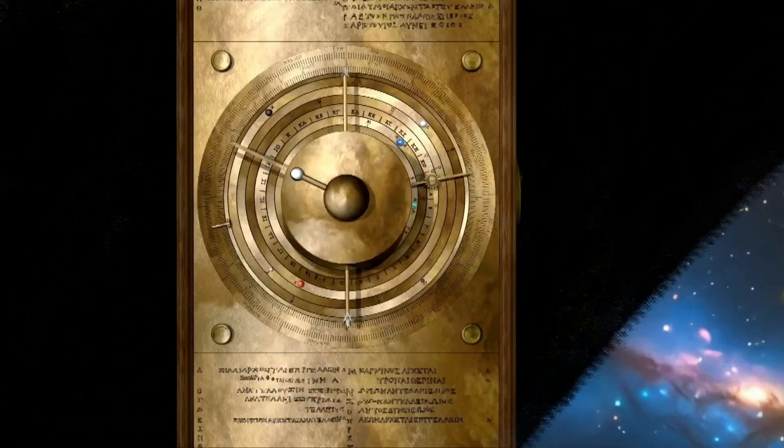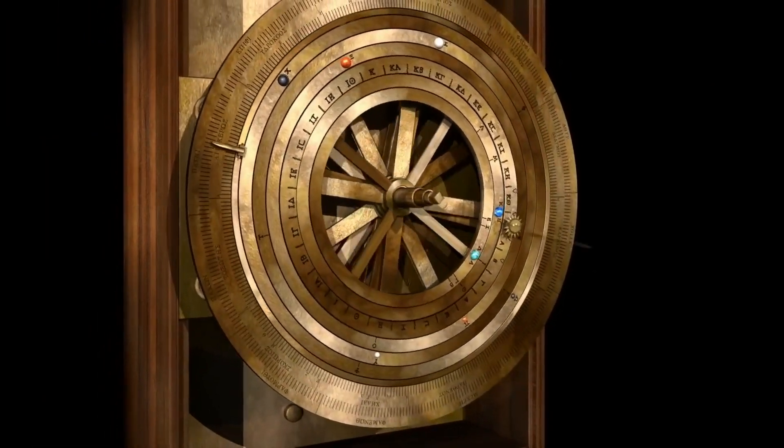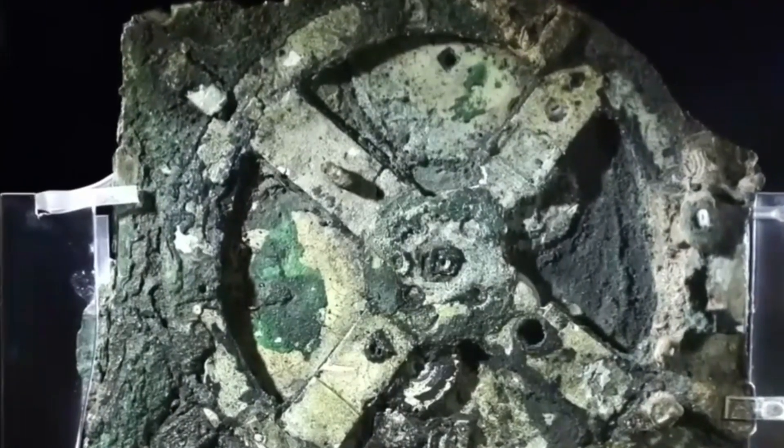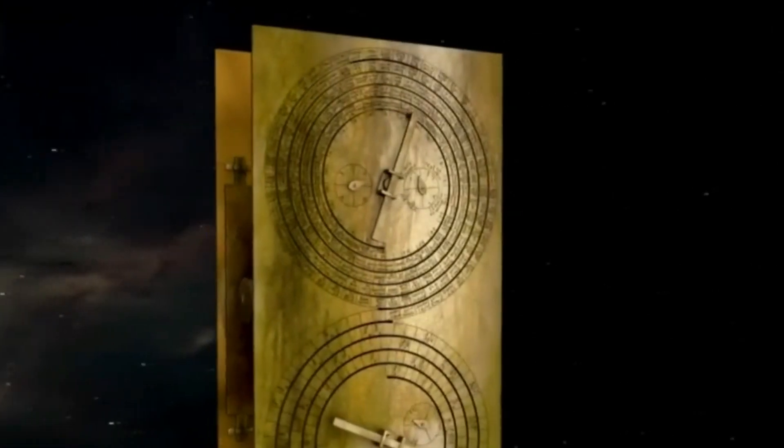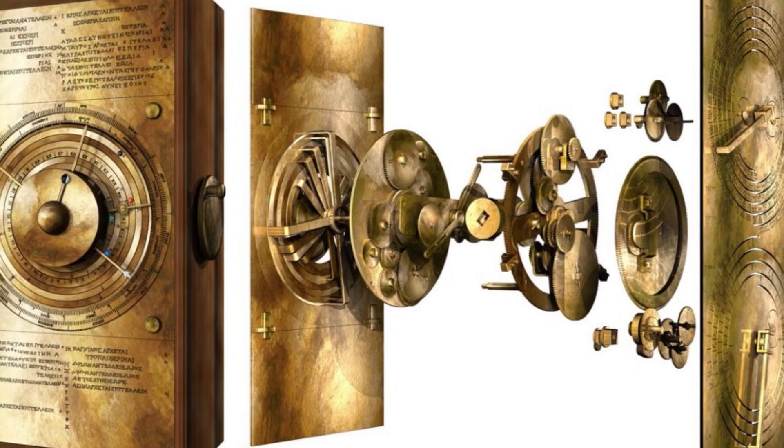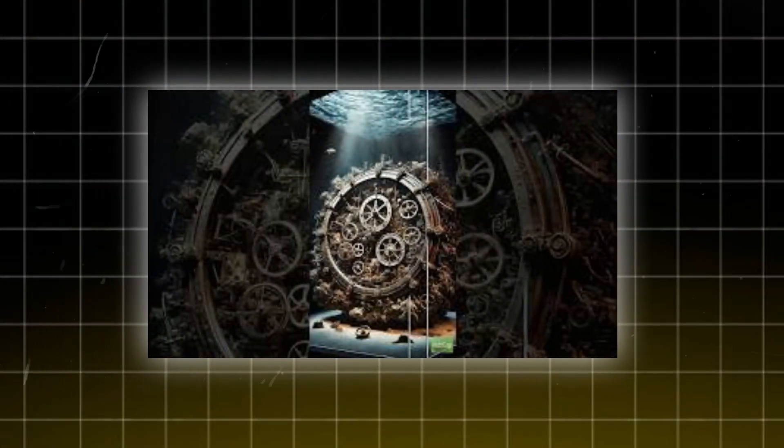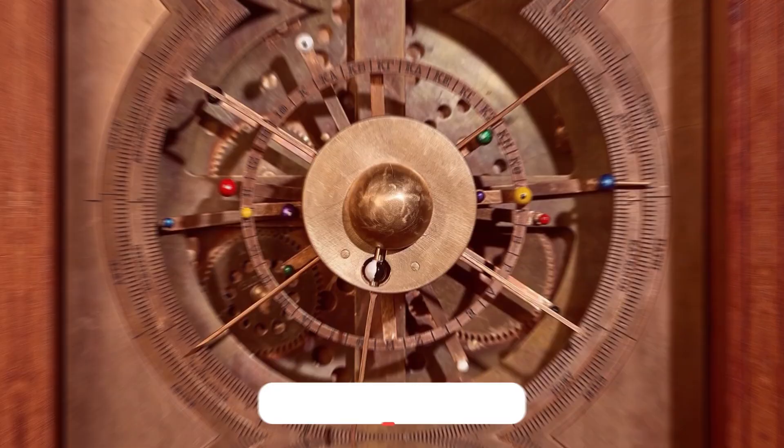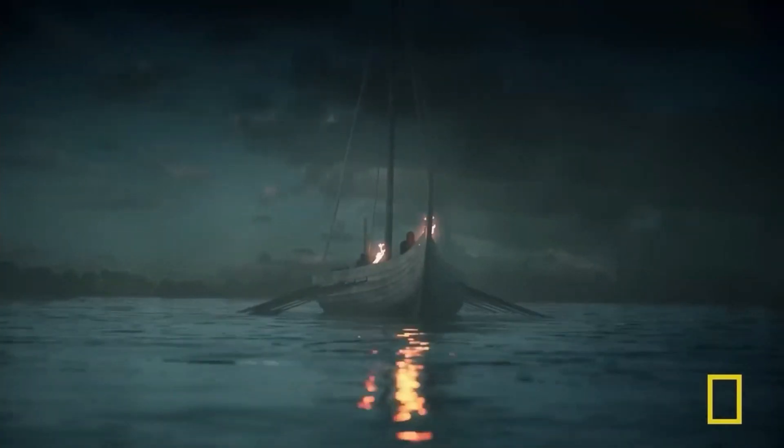The mechanism challenges assumptions about ancient civilizations. It shows the Greeks possessed advanced engineering skills capable of creating a device that modeled the cosmos with gears. This mechanical philosophy, where gears represented celestial movements, influenced later Byzantine and Islamic devices, such as astrolabes. As we study this device, we are reminded of the fragility of progress and the enduring quest to understand the cosmos. Share your thoughts in the comments, like this video, and subscribe for more stories about history's hidden wonders.